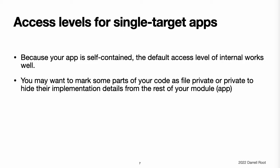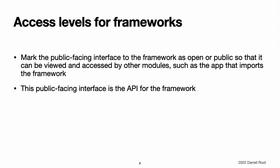You may, however, want to mark some parts of your code as file private or private in order to hide their implementation details from other code within the app's module. Access levels for frameworks. When you develop a framework, mark the public-facing interface to that framework as open or public so that it can be viewed and accessed by other modules, such as an app that imports the framework. This public-facing interface is the application programming interface, or API, for the framework.